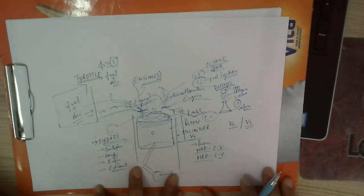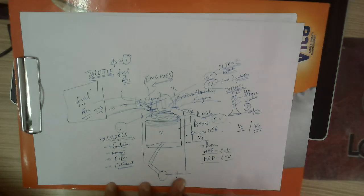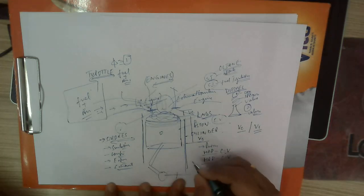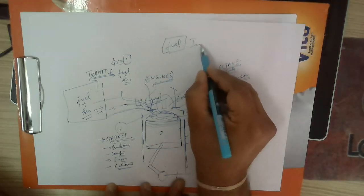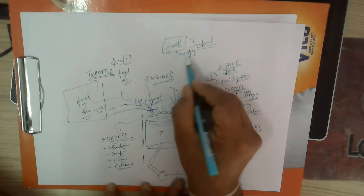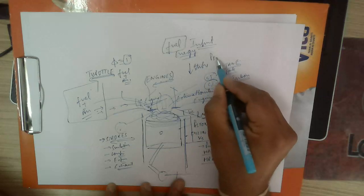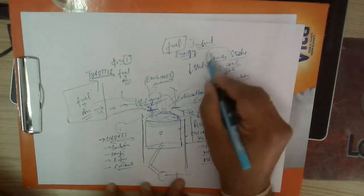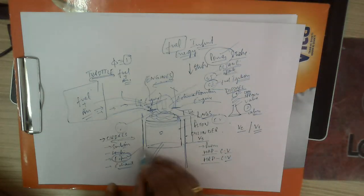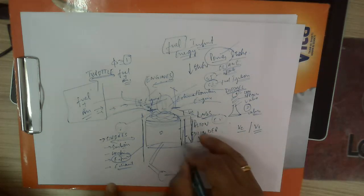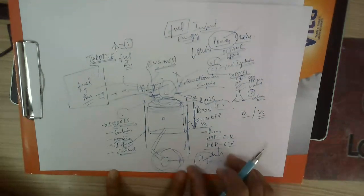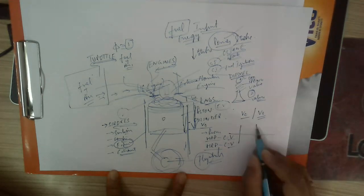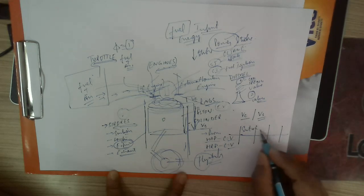An IC engine is a device that utilizes fuel as input and converts that energy into the expansion or power stroke. The power stroke generates force that pushes the piston downward, creating rotating motion of the crankshaft. The crankshaft is connected to the flywheel, which stores energy and dissipates it when required during the other cycles — suction, compression, and exhaust.